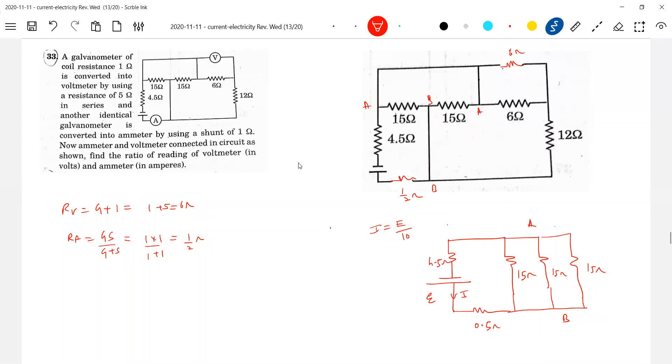Now this particular current I will branch. Okay, this is the thing here. Will become how much? I by 3. And here is what? Voltmeter. This I by 3 here, which is flowing, will branch out. So the reading of voltmeter is this one. We are interested in that IV. So what is IV?